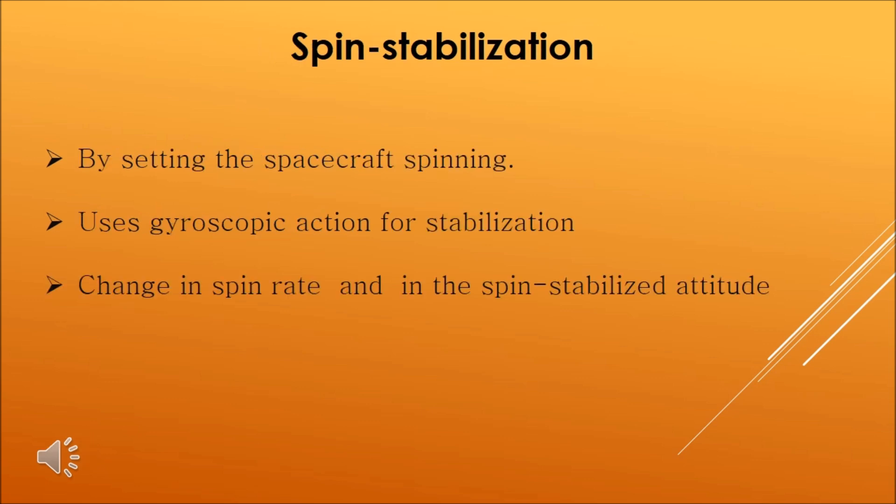Now let us come to the first method of stabilization, that is spin stabilization. Spin stabilization is the method of stabilizing a satellite or launch vehicle by means of spin. For most satellite applications, this approach has been superseded by three-axis stabilization.